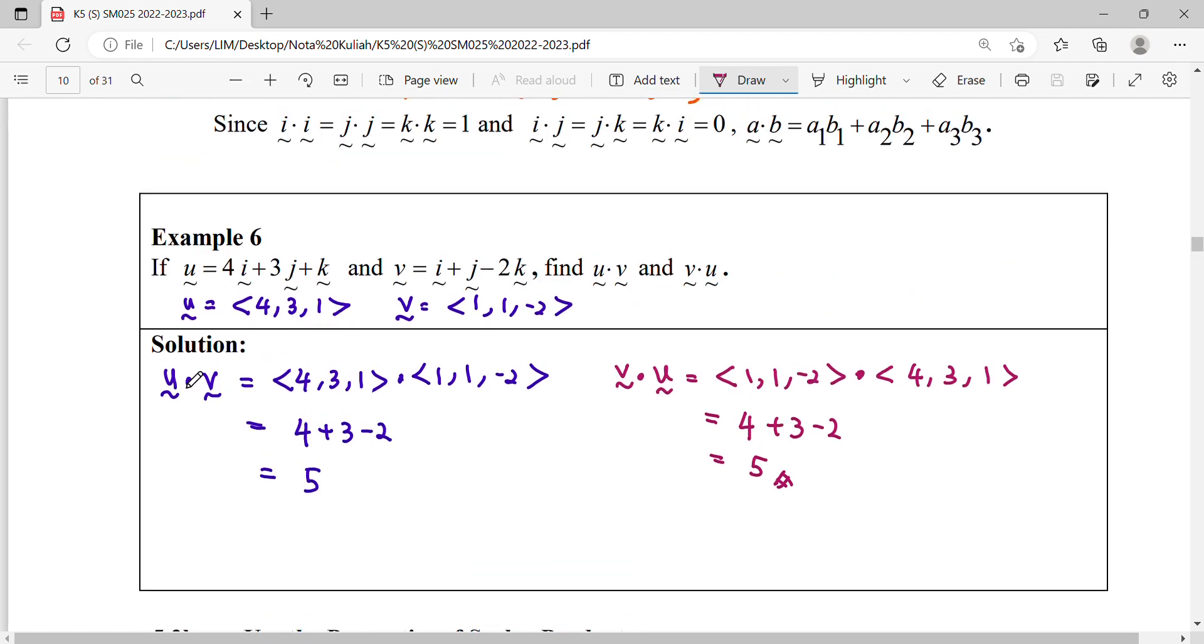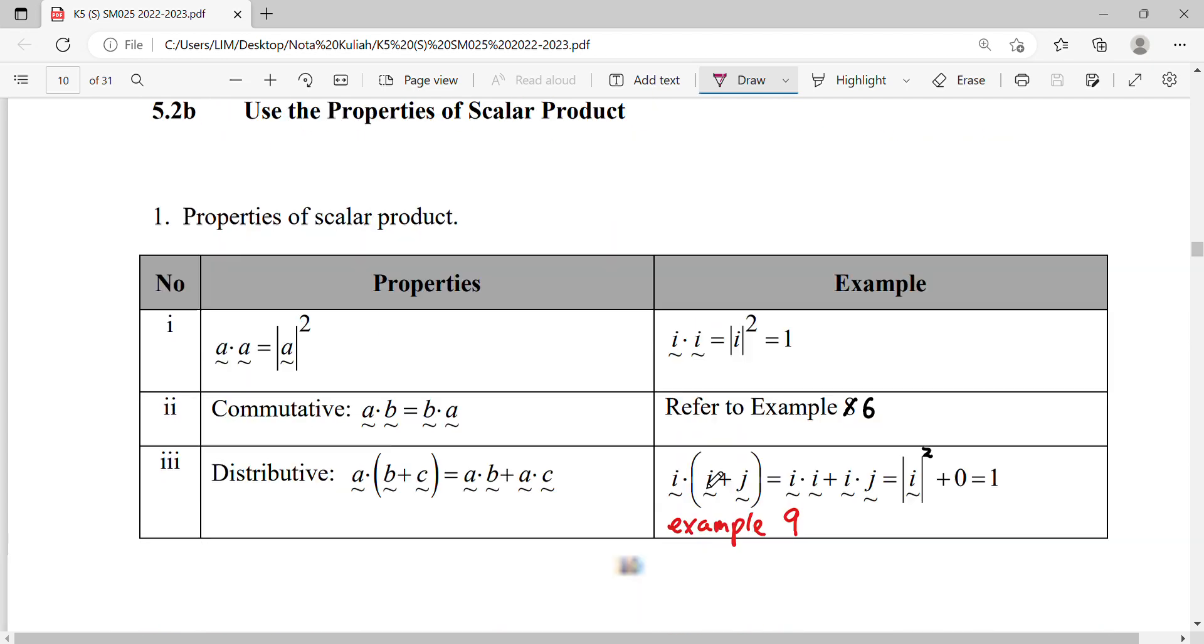You can notice that U dot V and V dot U, they are the same. So this is commutative law.